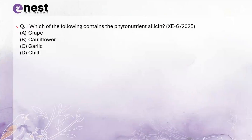Our first question is: which of the following contains the phytonutrient allicin? Please remember that allicin is a sulfur compound. The options are: option A, grape; option B, cauliflower; option C, garlic; and option D, chili.